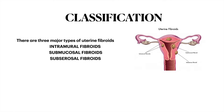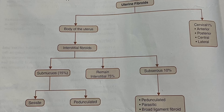There are three major types of uterine fibroids: intramural fibroids, submucosal fibroids, and subserosal fibroids. This uterine fibroid is classified into body of the uterus and cervical fibroids. According to the position, cervical fibroids are again classified into anterior, posterior, central, and lateral.